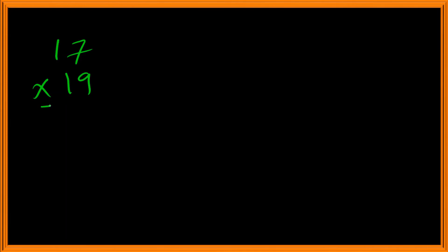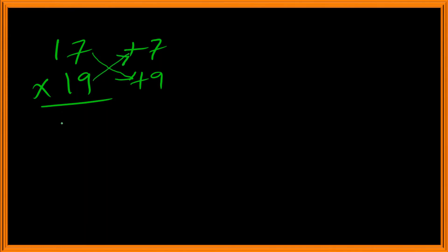Let's take another example: 17 multiplied by 19. The base, as we know, is 10. The deviation for 17 is plus 7 and the deviation for 19 is plus 9. We add 17 plus 9, or 19 plus 7, which equals 26. So the left part is 26.